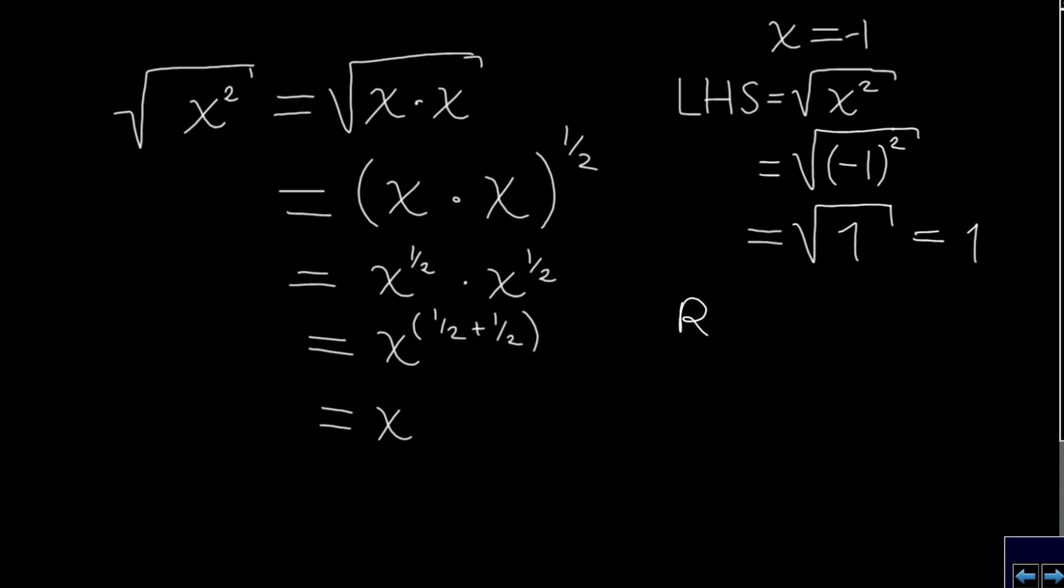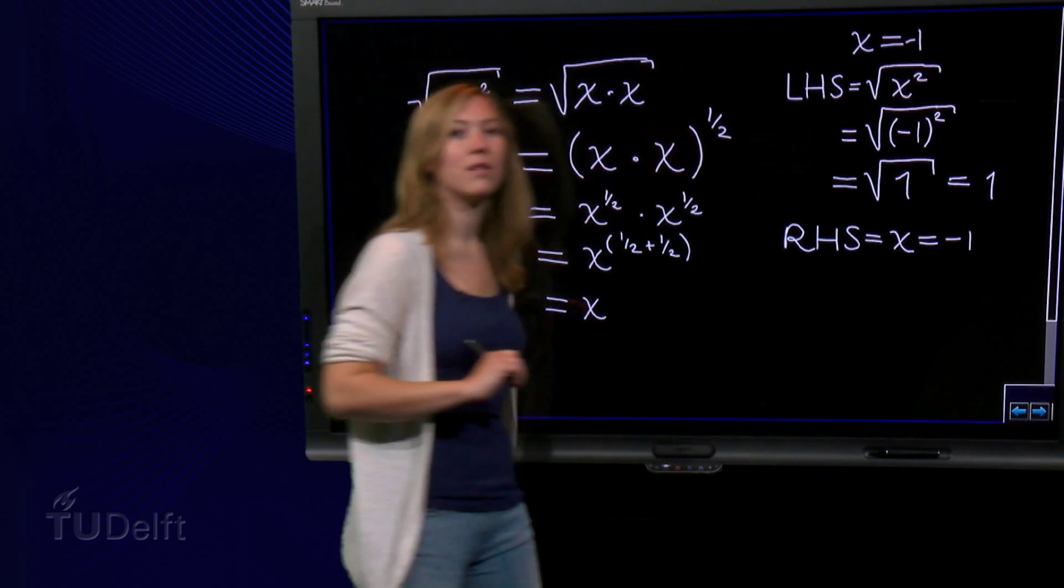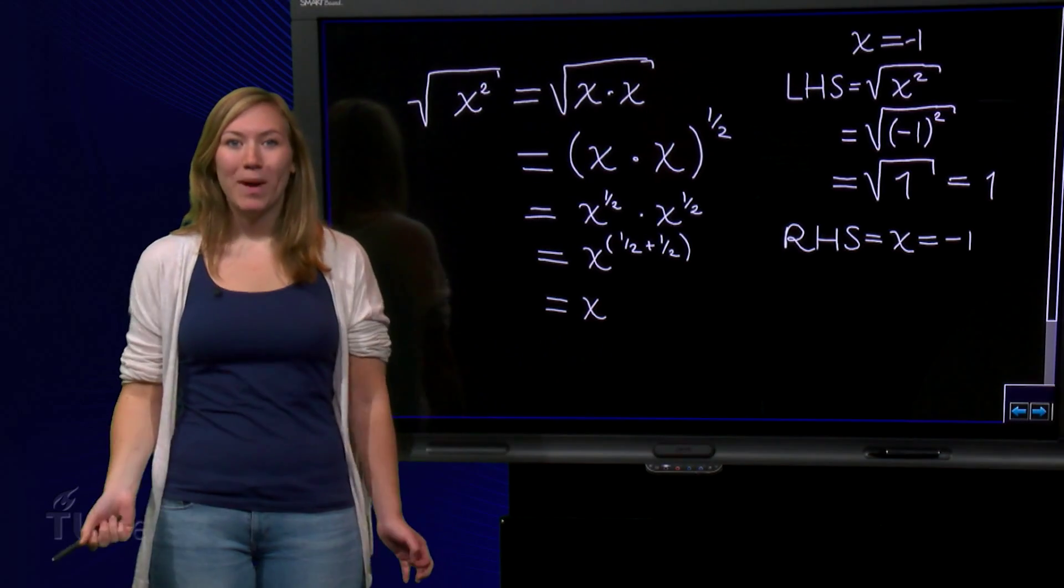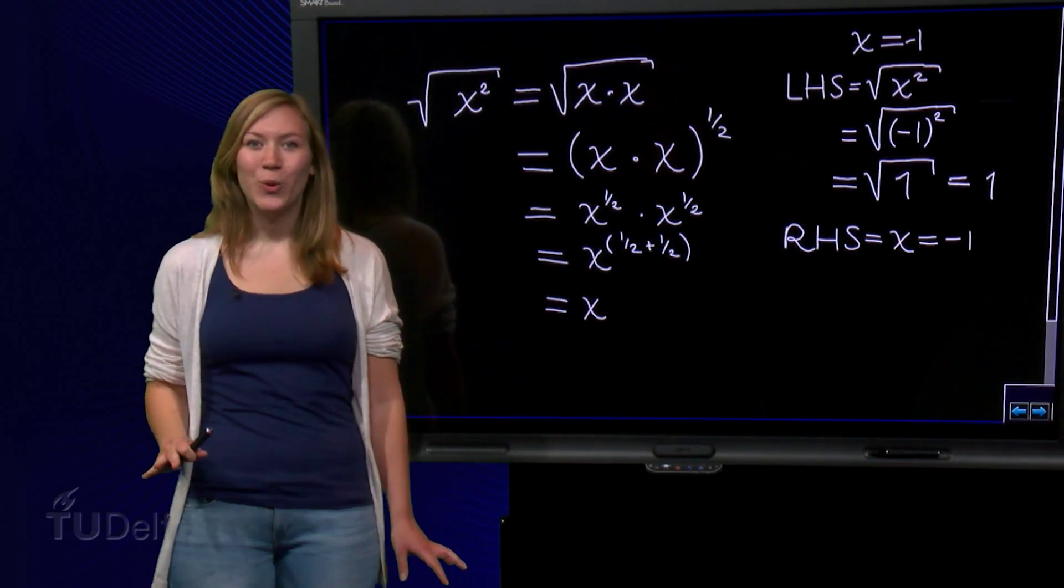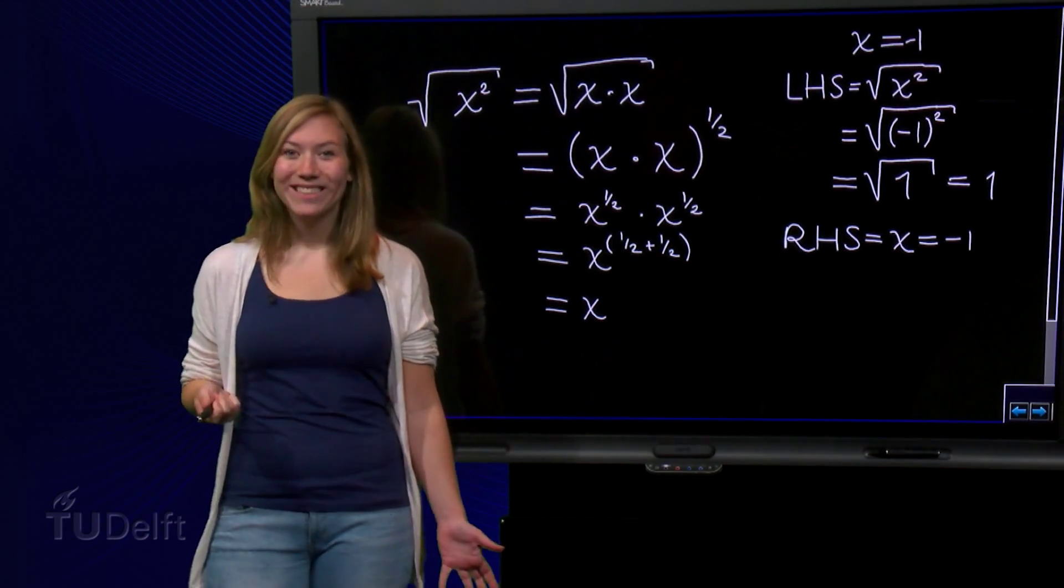But if we plug it into the right-hand side, which is just x, we get minus 1. So we get that 1 equals minus 1, and that is not true. Do you know what the mistake is here?